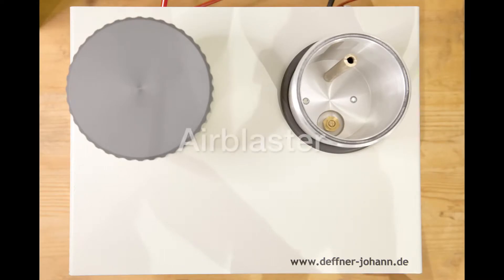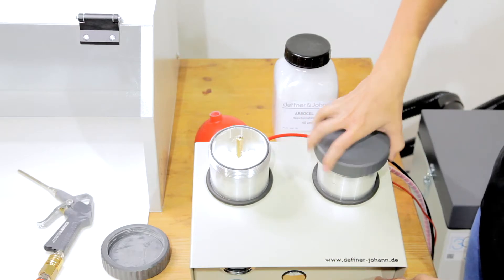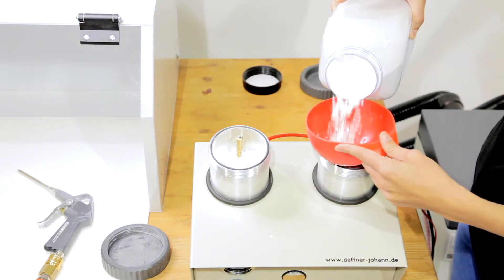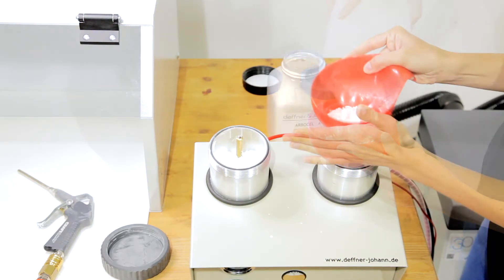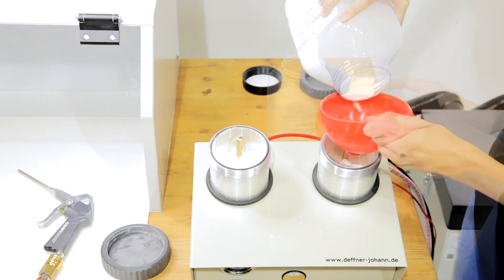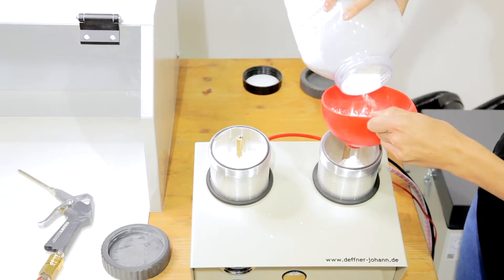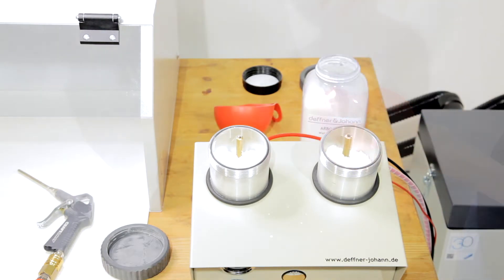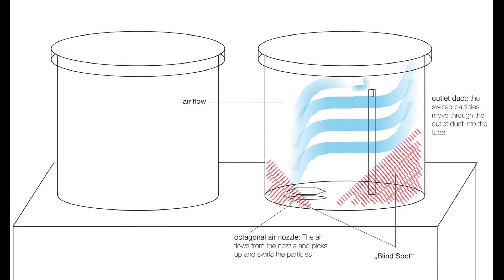The air blaster is equipped with two chambers, allowing us to flexibly use two different particles. I recommend to use a funnel when filling the chambers. Make sure that the chambers are filled two-thirds at maximum. This ensures that the airflow can still swirl the particles inside the chambers. The air flows from the nozzle, picks up and swirls the particles, making it move through the outlet duct in the tube.